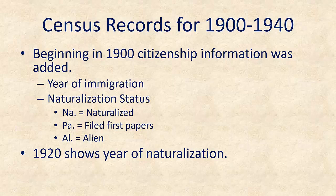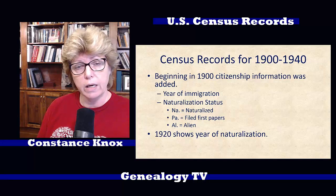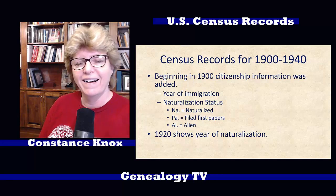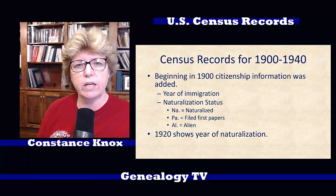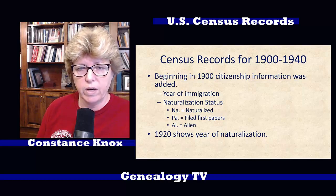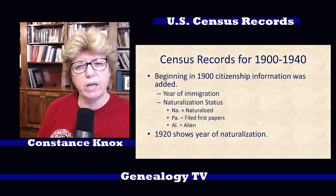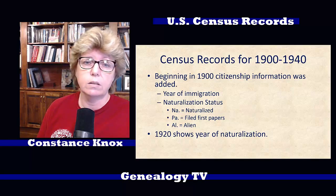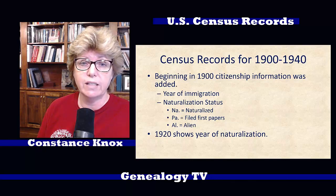In the 1920 census, they start showing the year of naturalization, which can be helpful. However, be forewarned that that information could be wrong — as I learned the hard way, because one of my ancestors said they were naturalized and showed the year of naturalization, which was impossible because they had not been in the United States for five years yet. Some people may have thought they were naturalized and they were not. Question everything — that's what I always say.